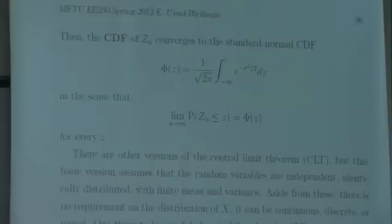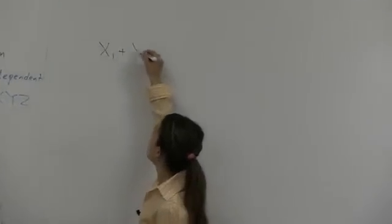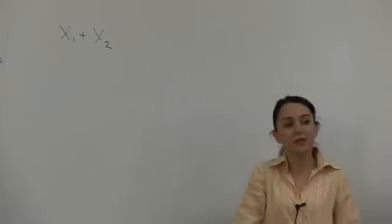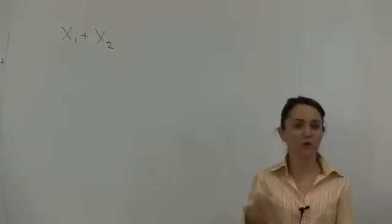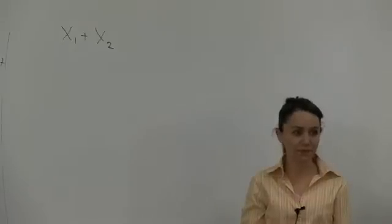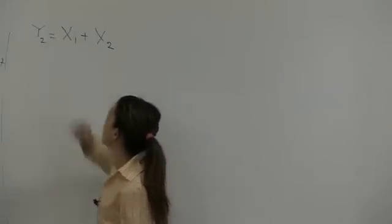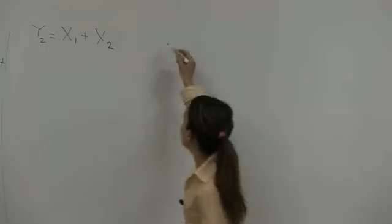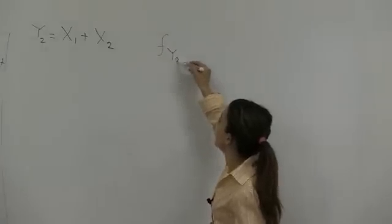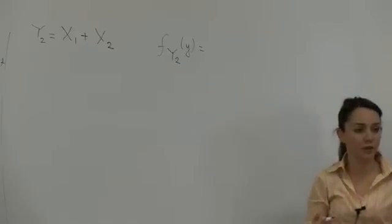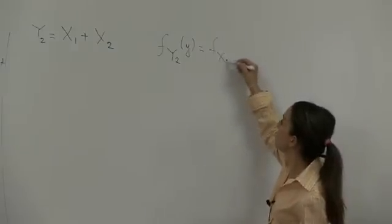This is a different type of convergence. It's convergence in distribution. So you will remember from our earlier lectures where we considered the sum of independent random variables, x1 and x2. For example, consider the case when x1 and x2 are both continuous.